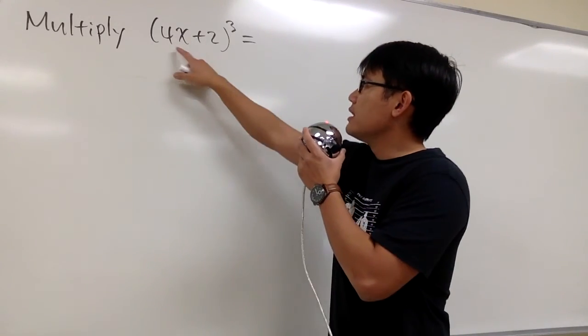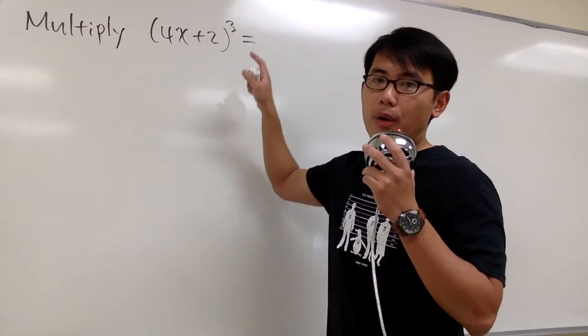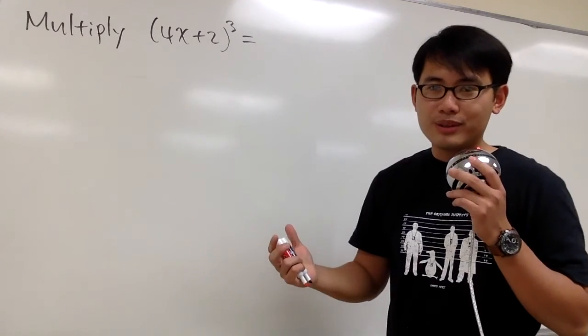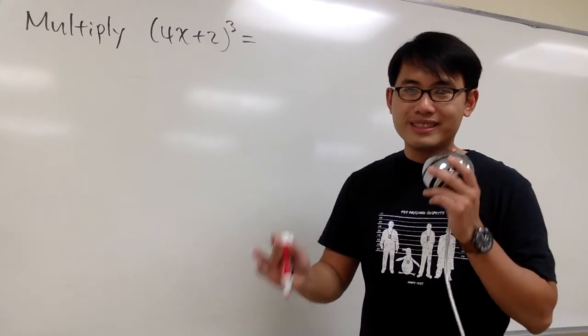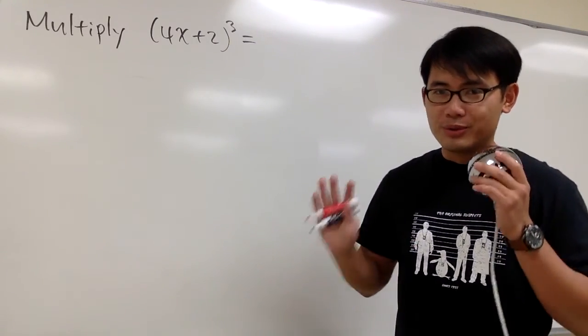We are going to multiply (4x + 2)³, and before I show you the right way to do this, let me show you the wrong way to do this, so that we don't do the wrong way.